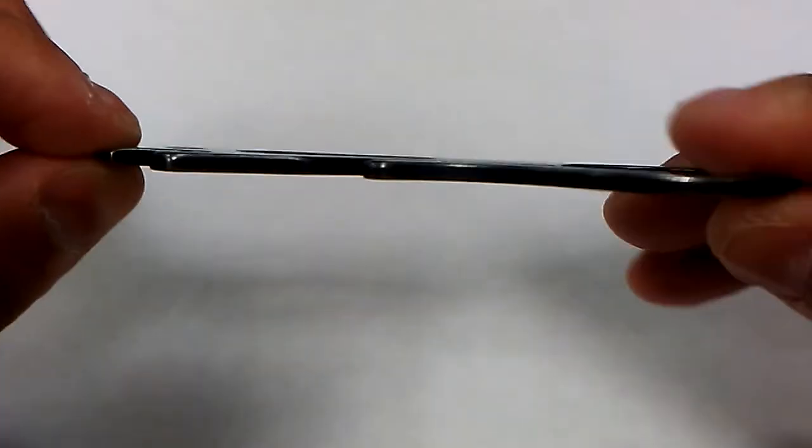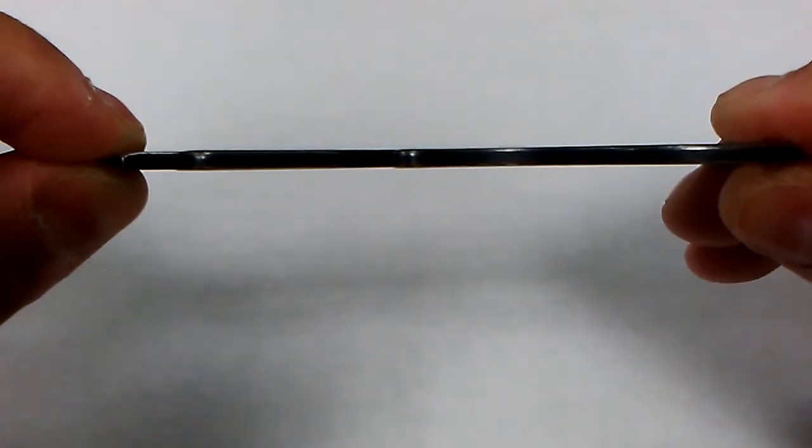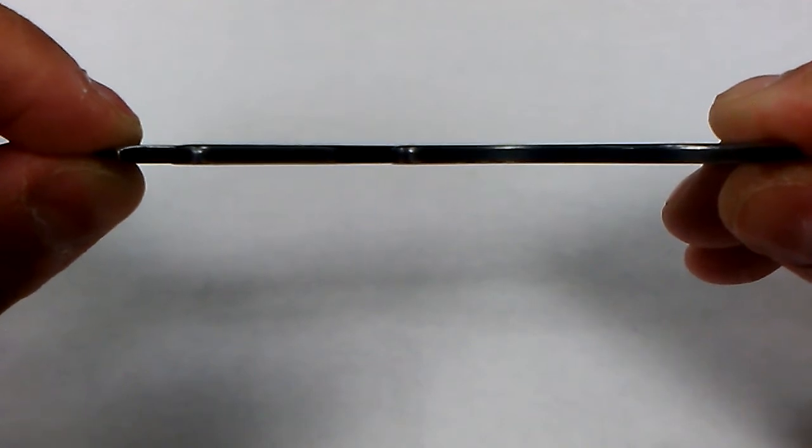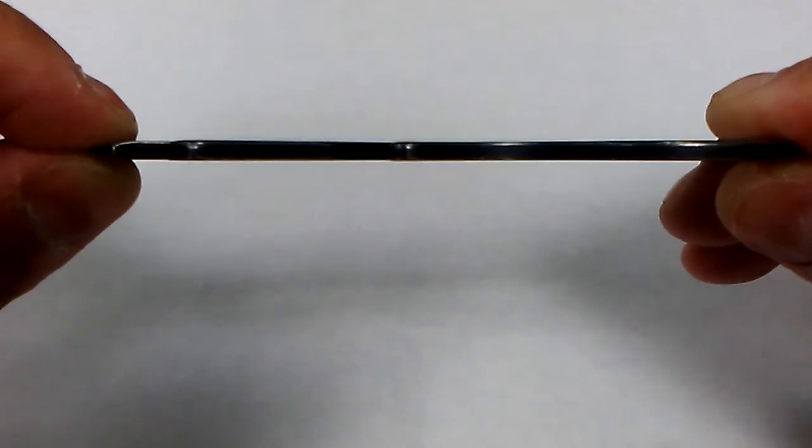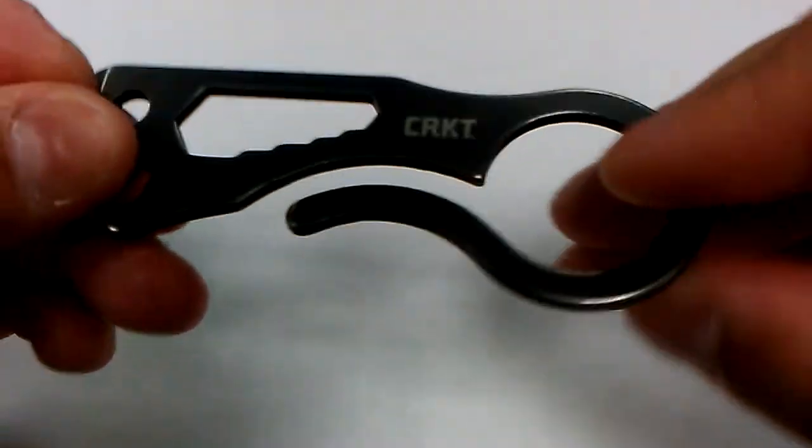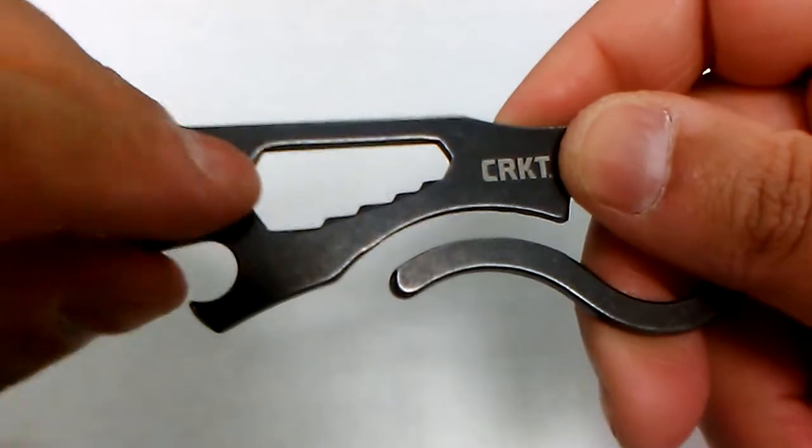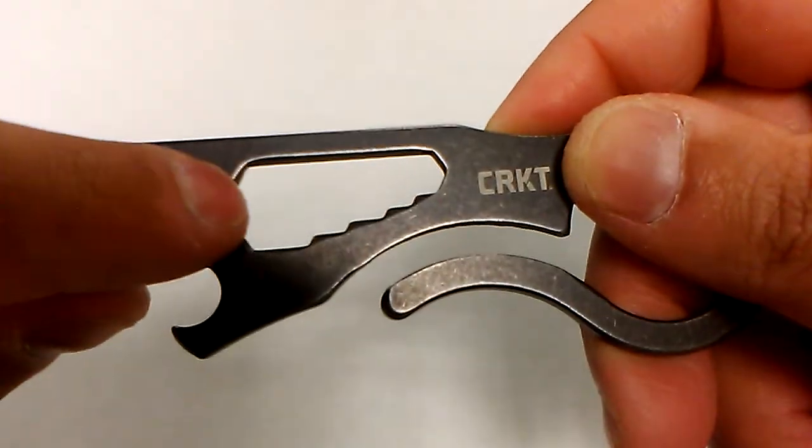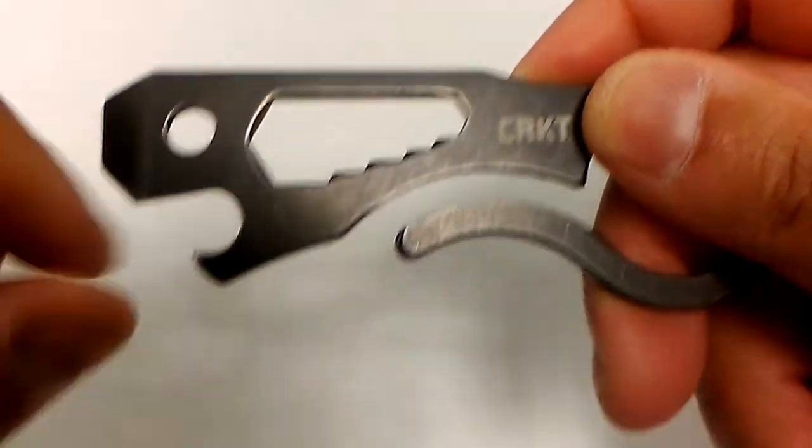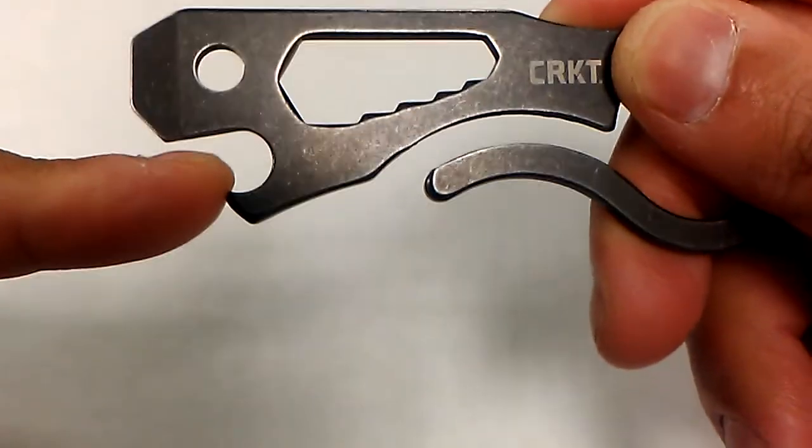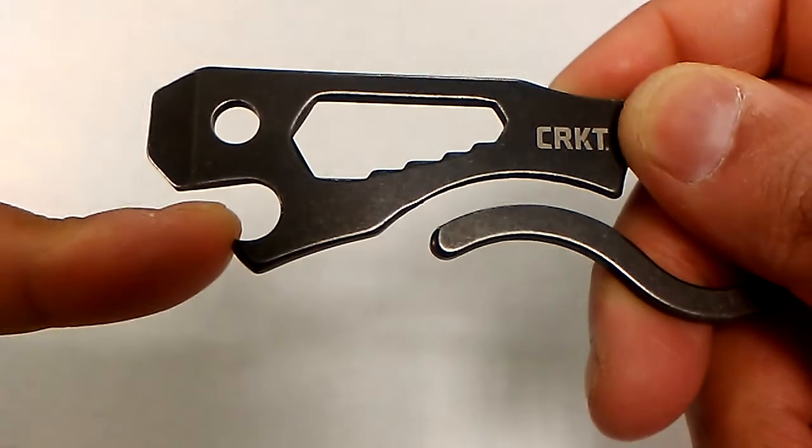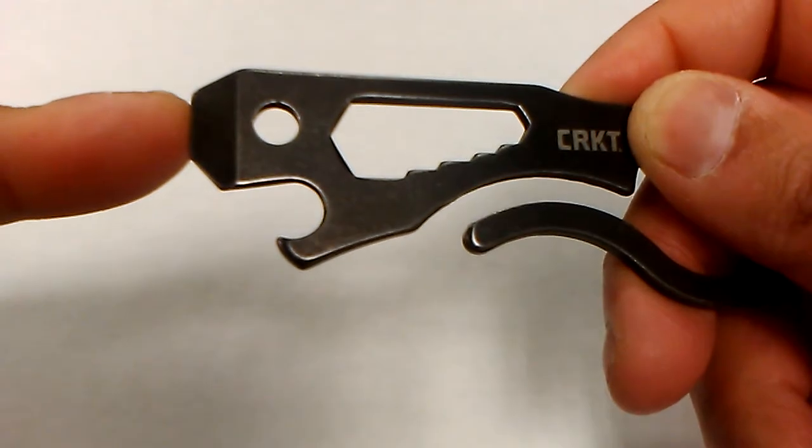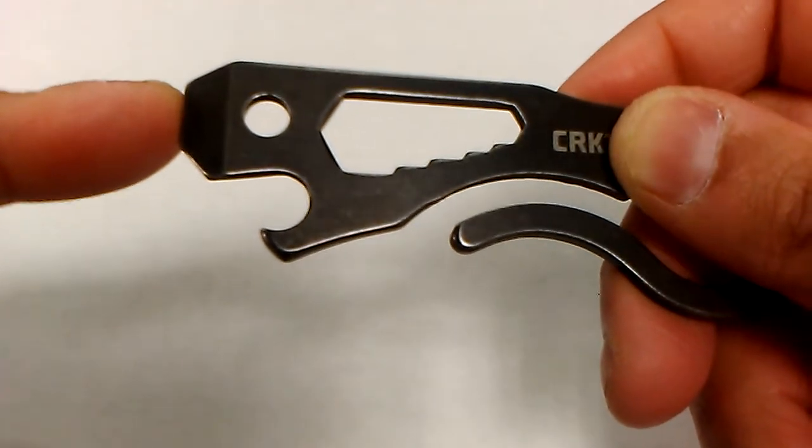First off, extremely thin. Most OPMTs are extremely thin. The Viva, no exception. What you get is wrenches, different sizes here. You get your ubiquitous bottle opener and a large flathead screwdriver.